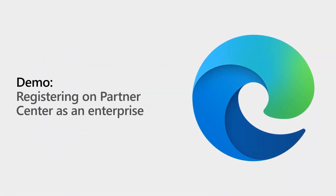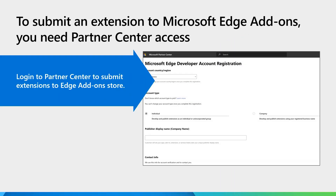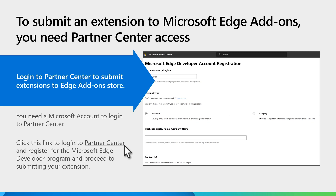Now I'll go into a demo to help you register your enterprise so that you can submit extensions. This is the first step to help developers in your organization publish extensions. Partner Center is the way for you to submit extensions to the Microsoft Edge add-ons website. To log into the Partner Center, your organization must have a Microsoft account, and then you will have to register into the Microsoft Edge add-ons program. At the moment, you're required to have an MSA account to register for the Microsoft Edge add-ons program.